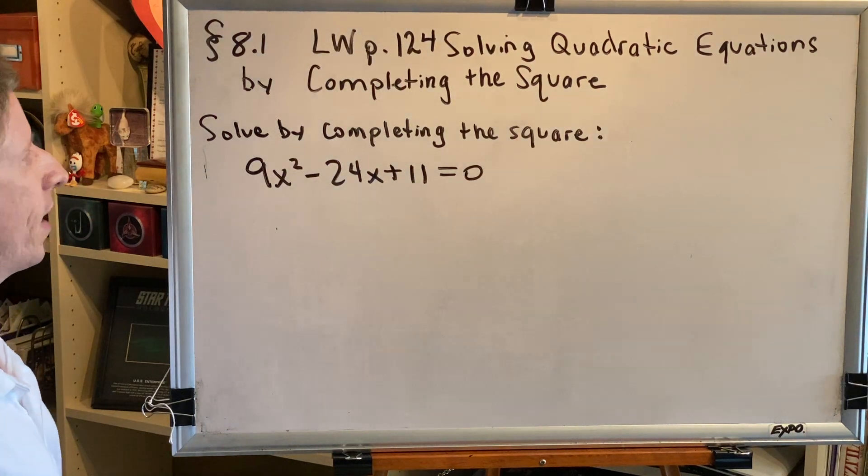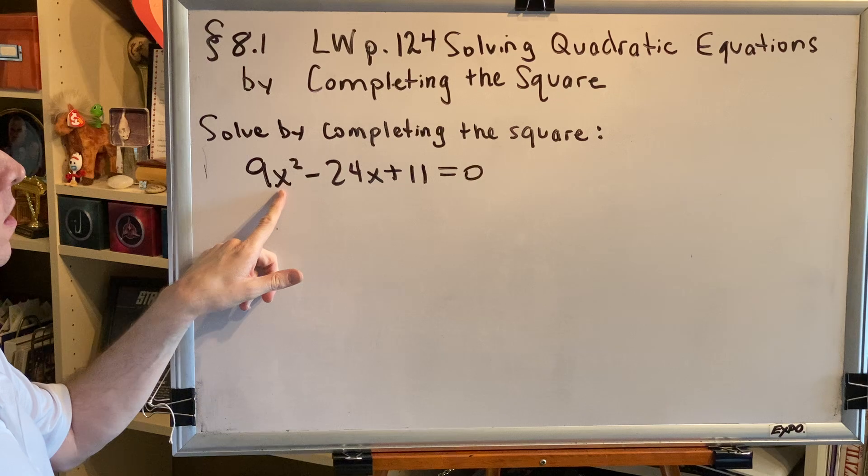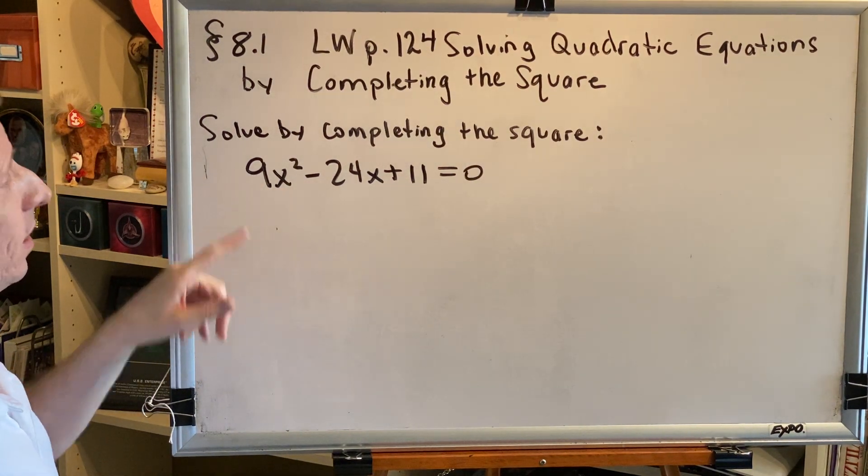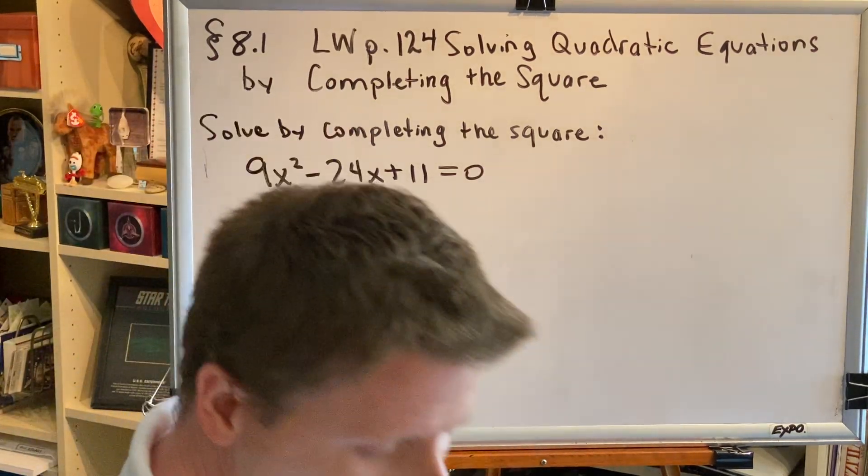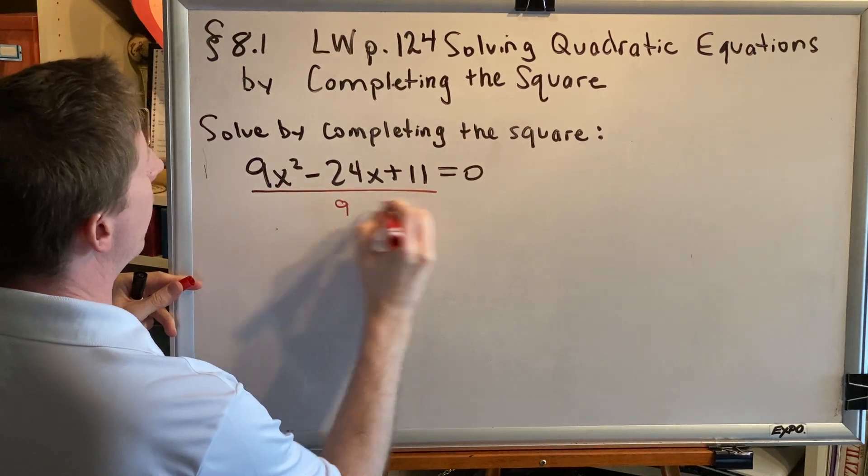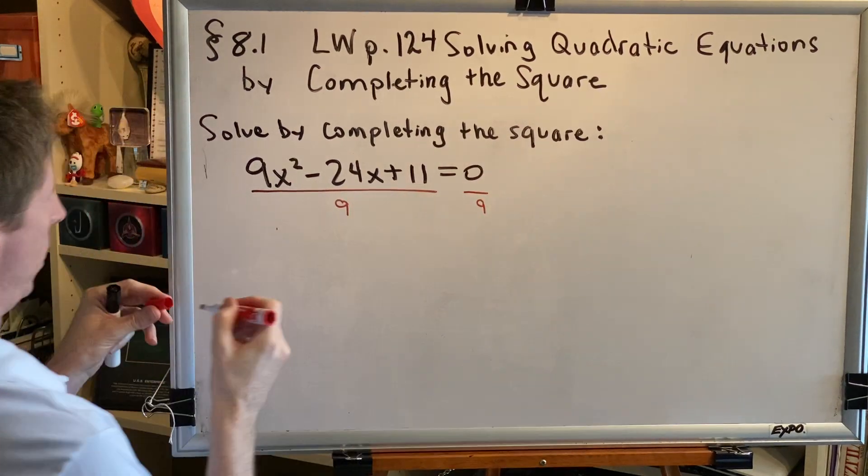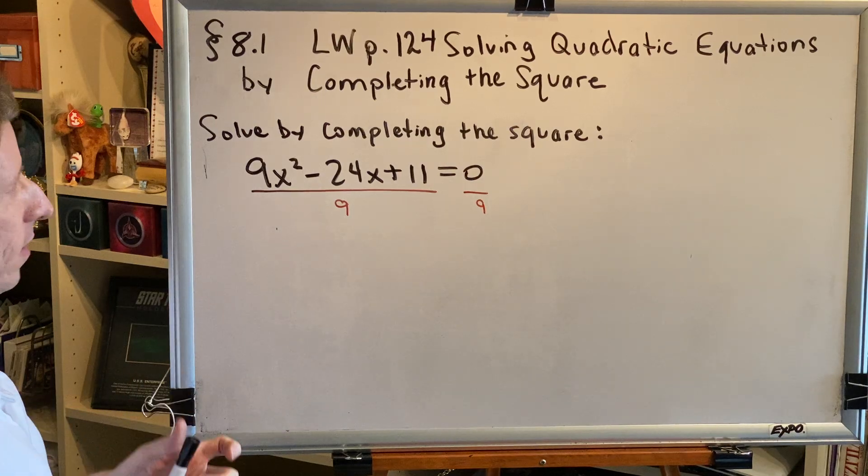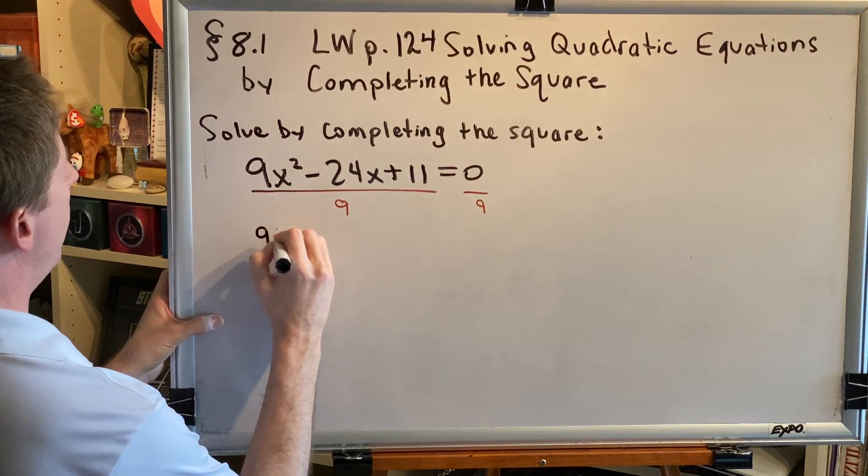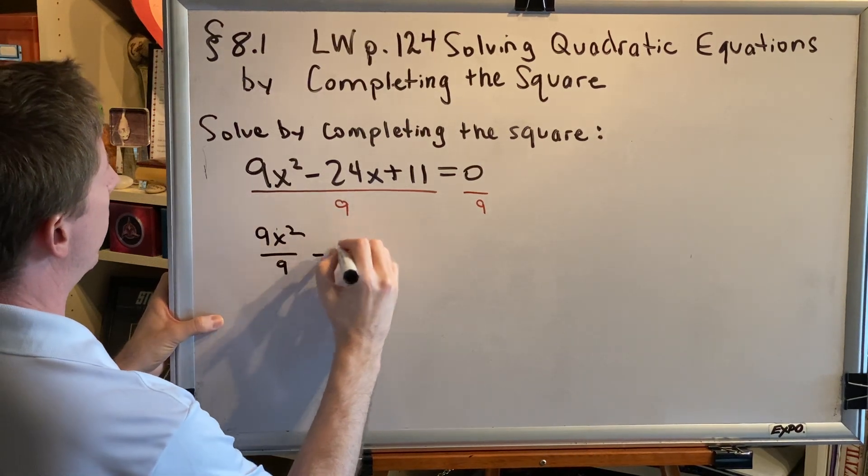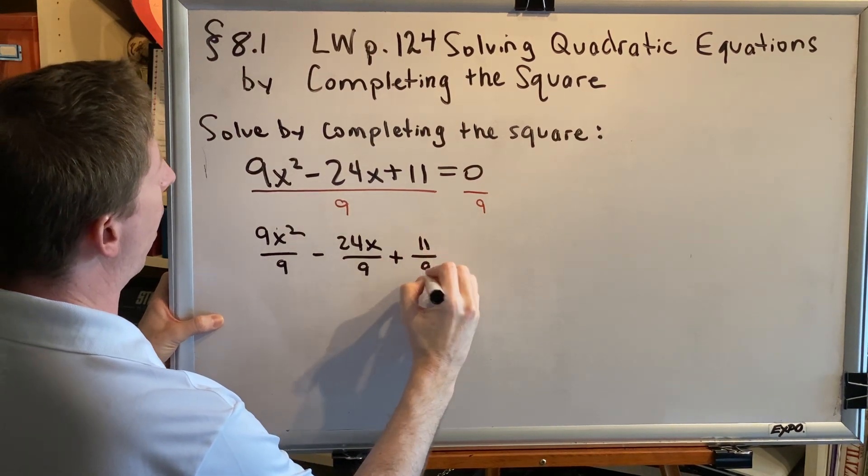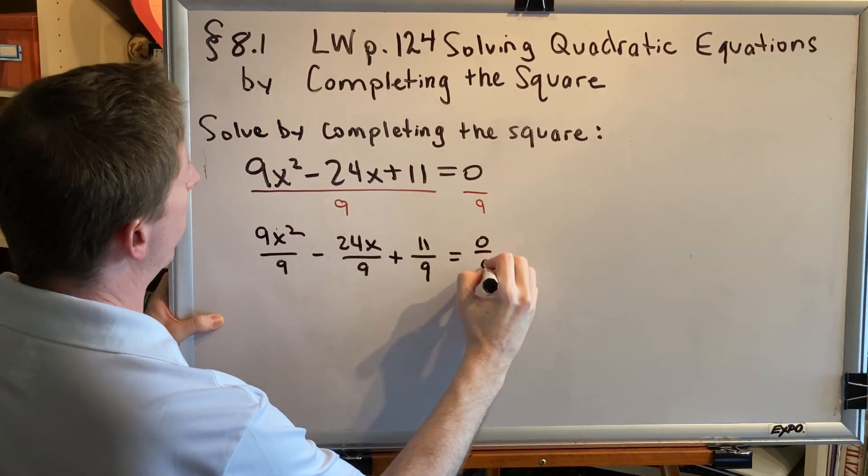The first step says to verify that the variable squared coefficient is 1, and if it is not, then make it 1. Well, our variable squared coefficient is 9, which is not 1, so we need to make it 1. The way we do that is by dividing the entire left side and the entire right side of our equation by whatever this number is. In this case, 9. So, what do we get? 9x squared divided by 9 minus 24x divided by 9 plus 11 divided by 9 equals 0 divided by 9.